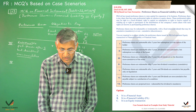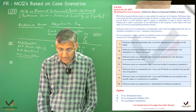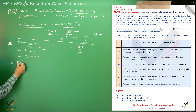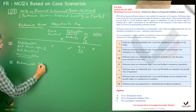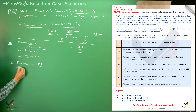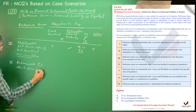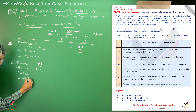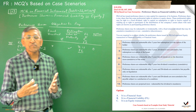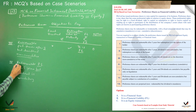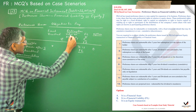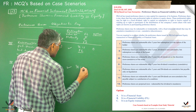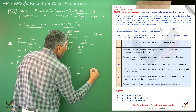Case 4: Preference shares are redeemable after five years, and dividends are mandatory — which means cumulative. The company has an obligation to pay dividends and an obligation to redeem on maturity. Therefore, it is a financial liability. The correct option is B.